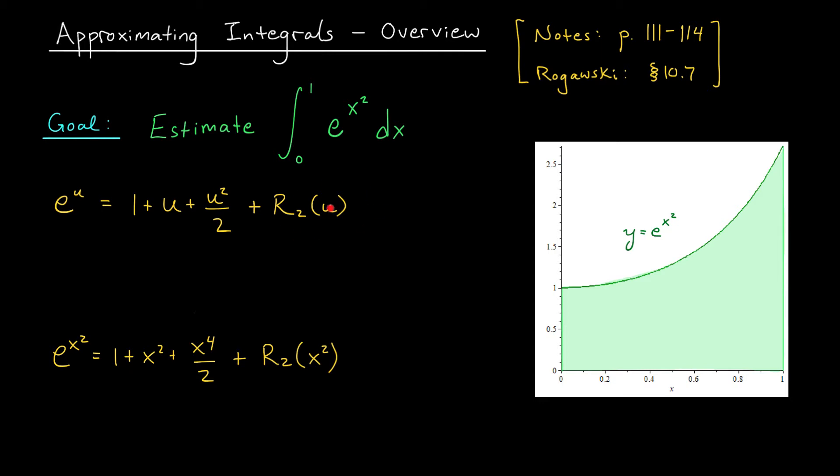Let's start by looking at the remainder term for e to the u. According to Taylor's inequality, the absolute value of this remainder is bounded above by a constant k times the absolute value of u minus 0 cubed, since we're looking at a quadratic approximation, divided by 3 factorial. Here, k denotes an upper bound for our third derivative for u values between 0 and 1. Well, but hold on a second. Our third derivative is still e to the u, right? So when u is between 0 and 1, our third derivative is bounded above by e.